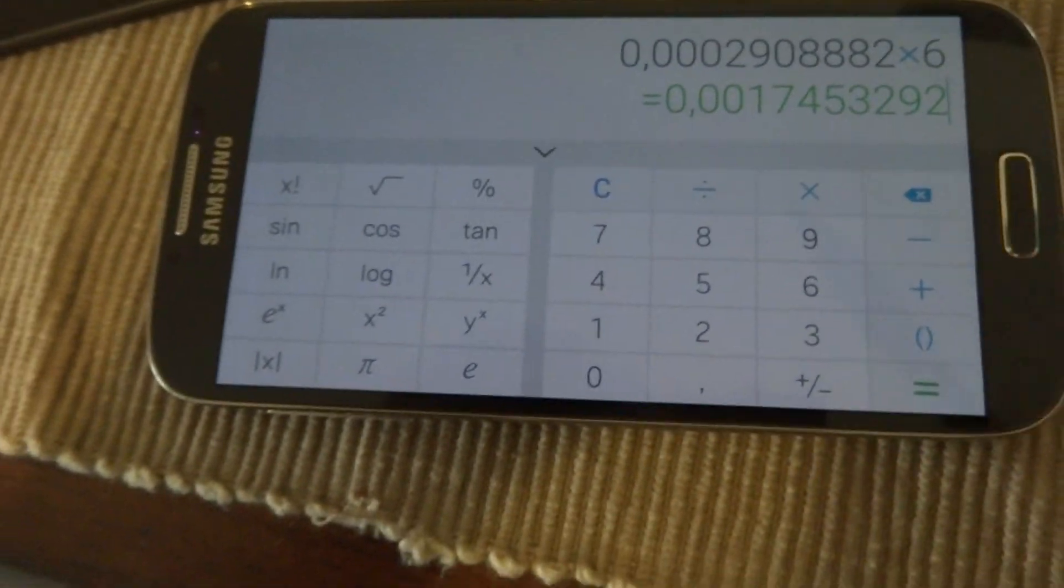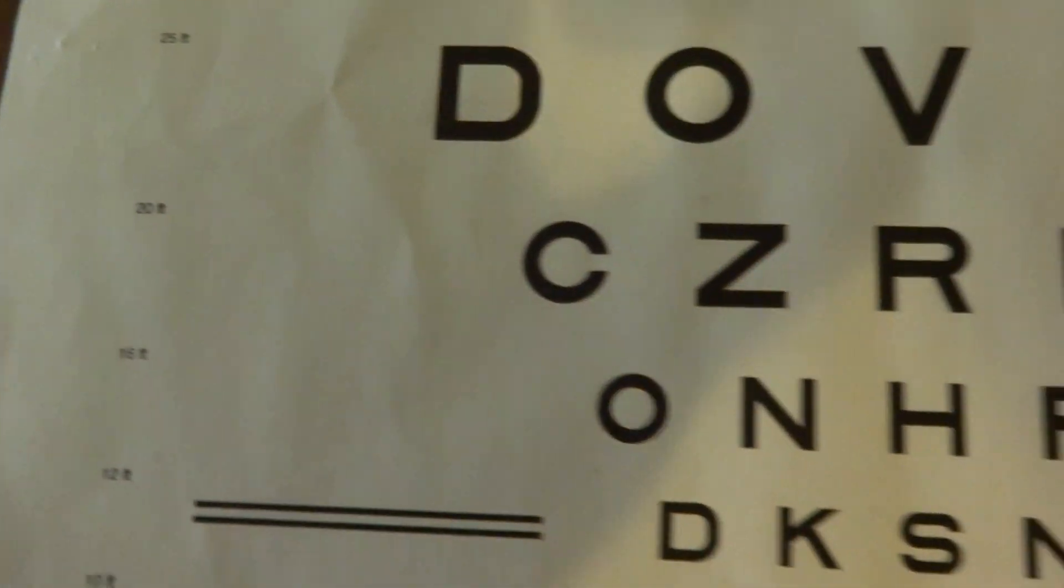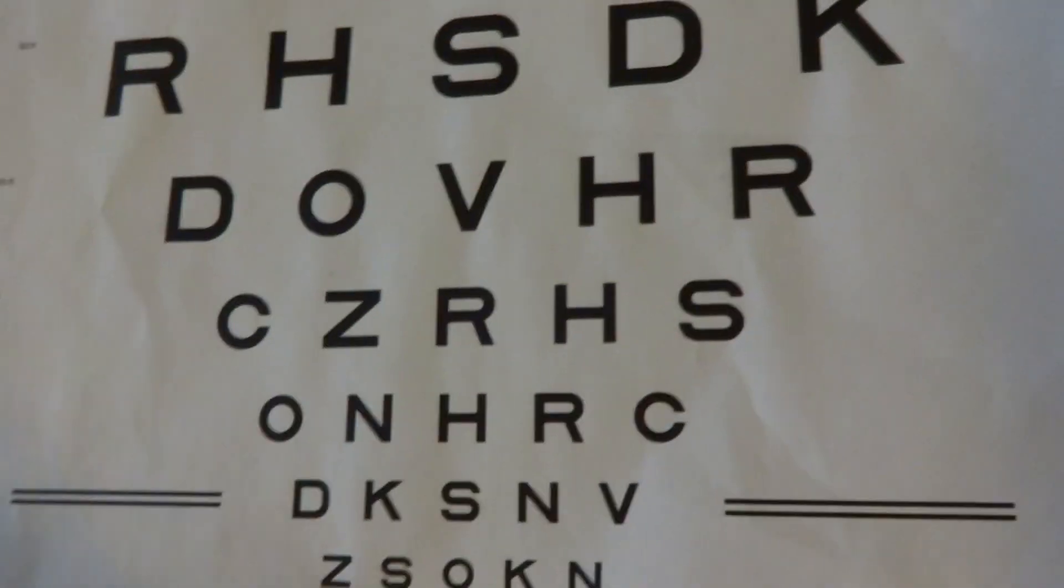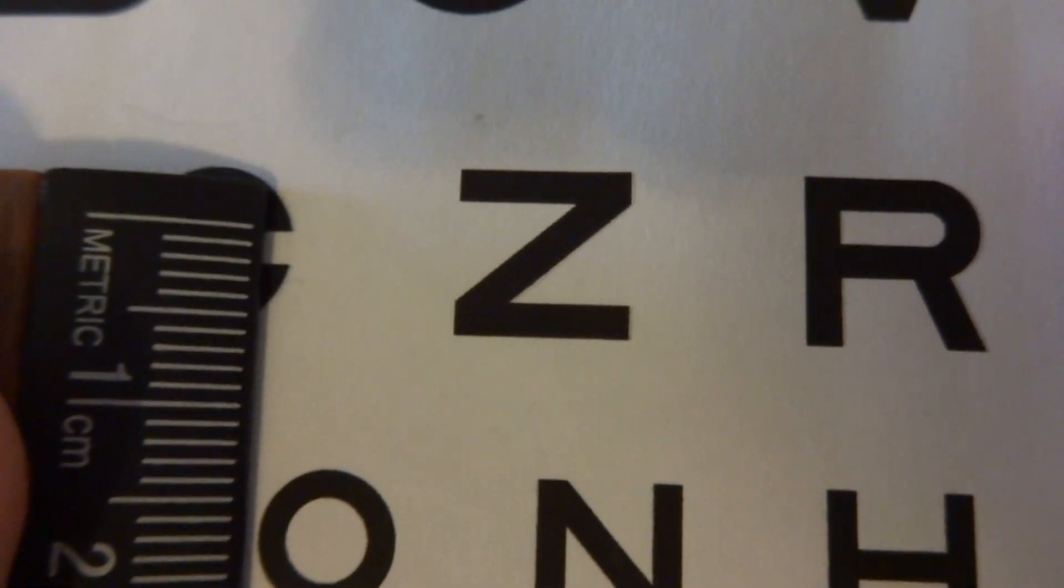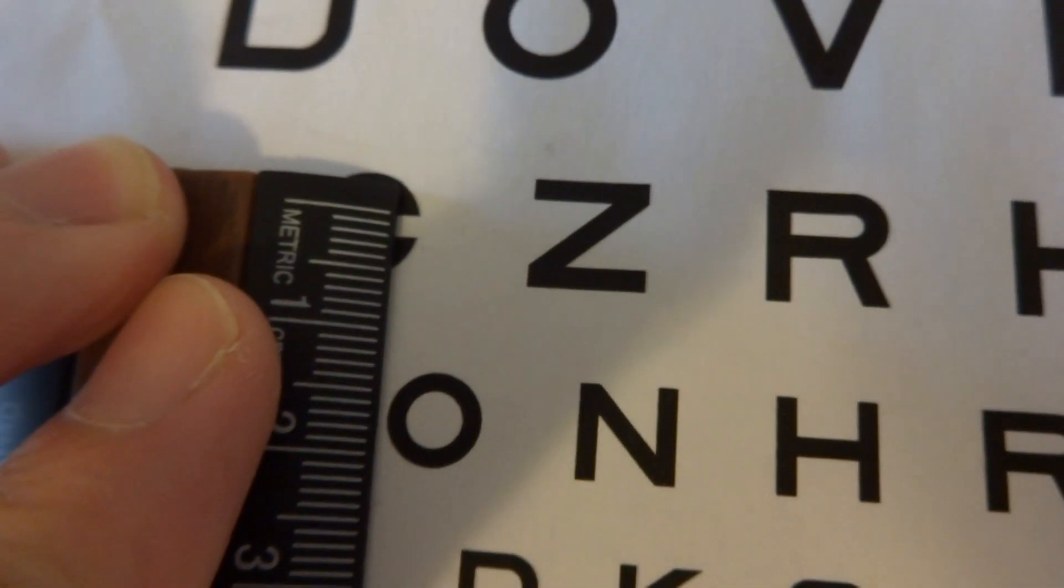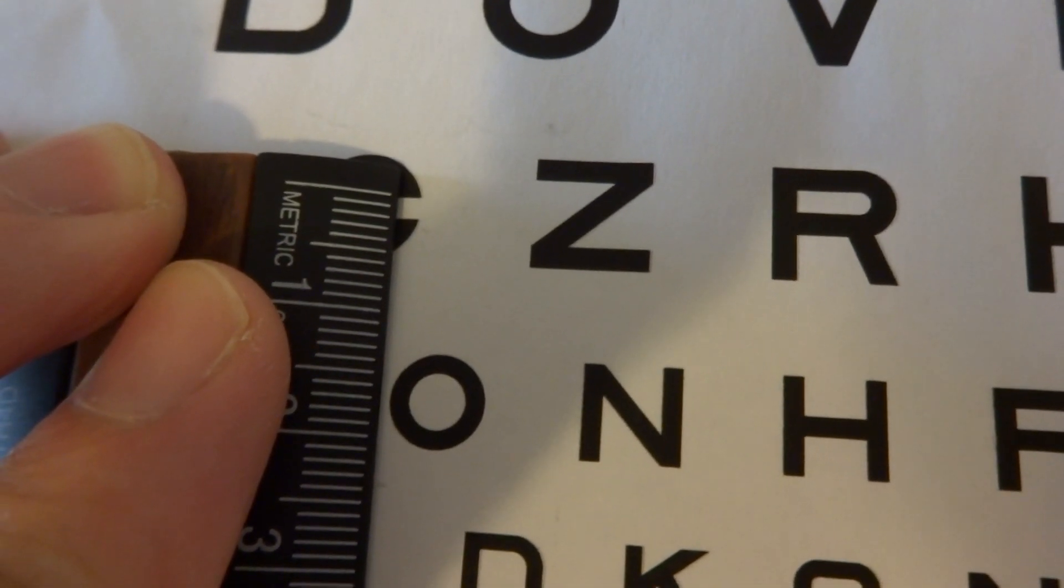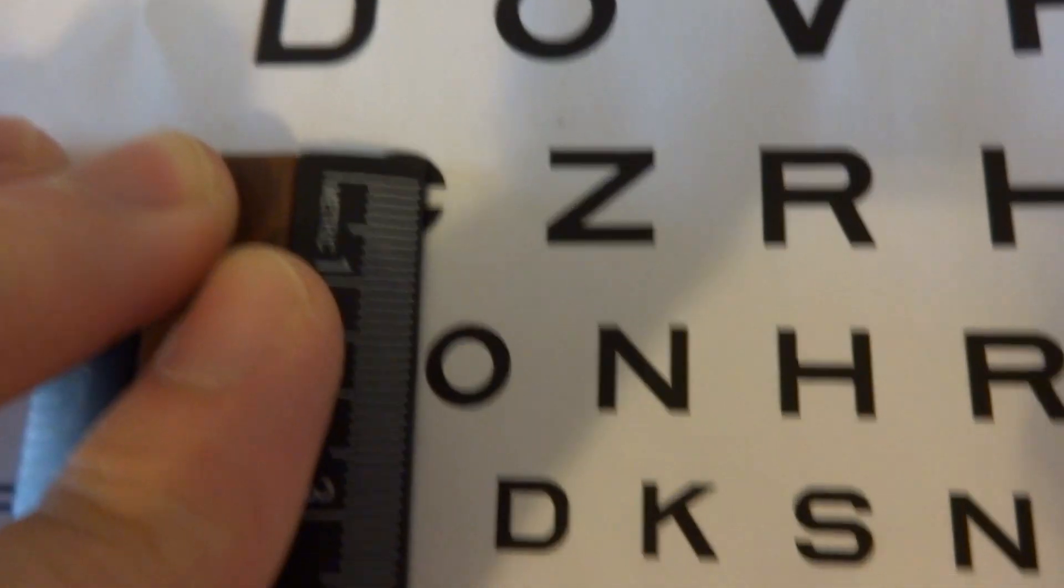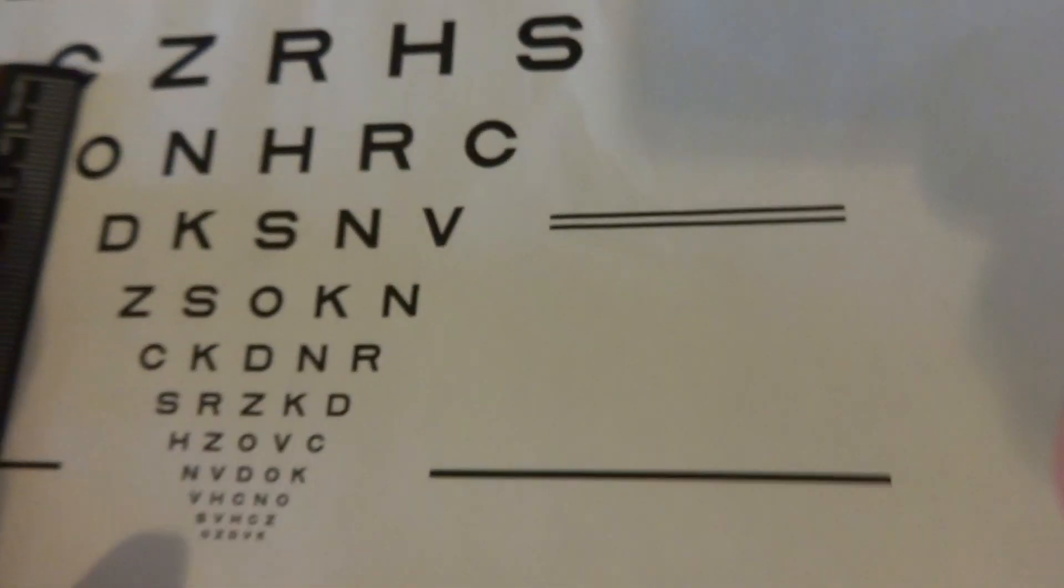So the critical detail on the 20-foot line, which is the C, Z, R, H, S line, the critical detail of each of these letters should be about 1.7 millimeters. So if we take our ruler, put this on here, you should be able to see if this is calculated properly and this is calibrated and printed properly, and the size of that gap, you can probably see it's about one and a half millimeters or 1.7 millimeters, just like what the math tells us.